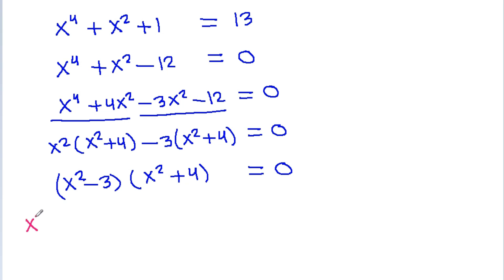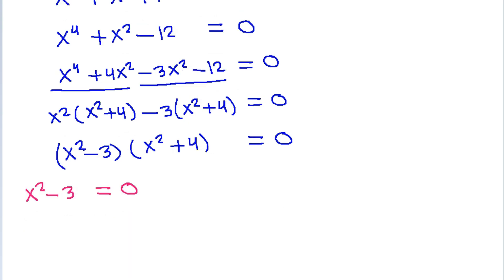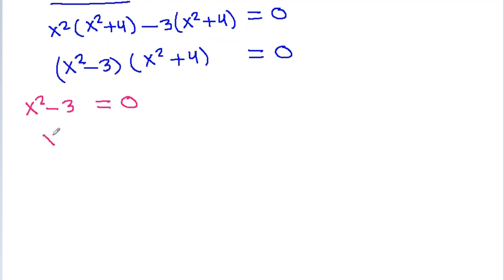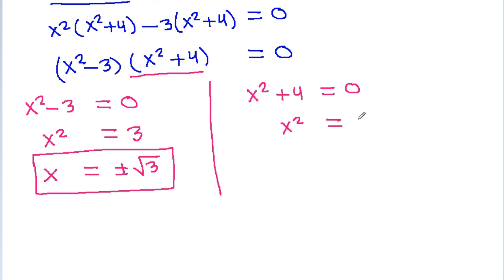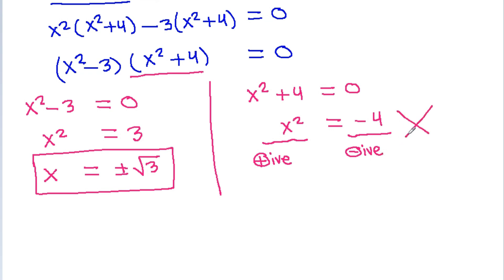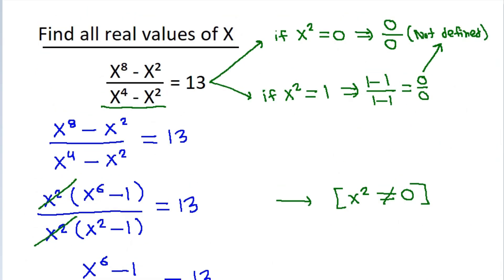Either x² - 3 = 0, giving x² = 3 and x = ±√3. Or x² + 4 = 0, giving x² = -4. But x² is always positive and -4 is negative, so this is not possible. Therefore the real solutions are x = ±√3.